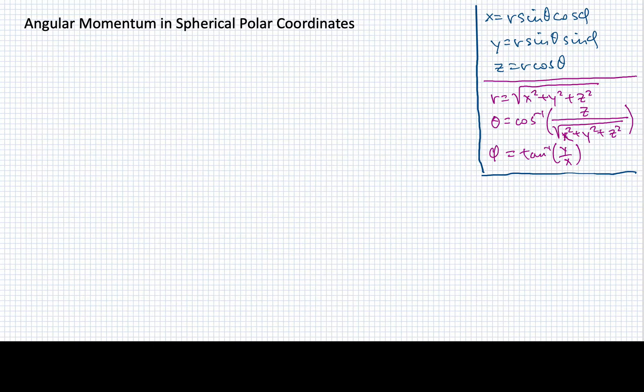Now I've written over here on the right side the definitions that define the spherical polar coordinates, both going from x, y, and z to r, theta, and phi, and vice versa.